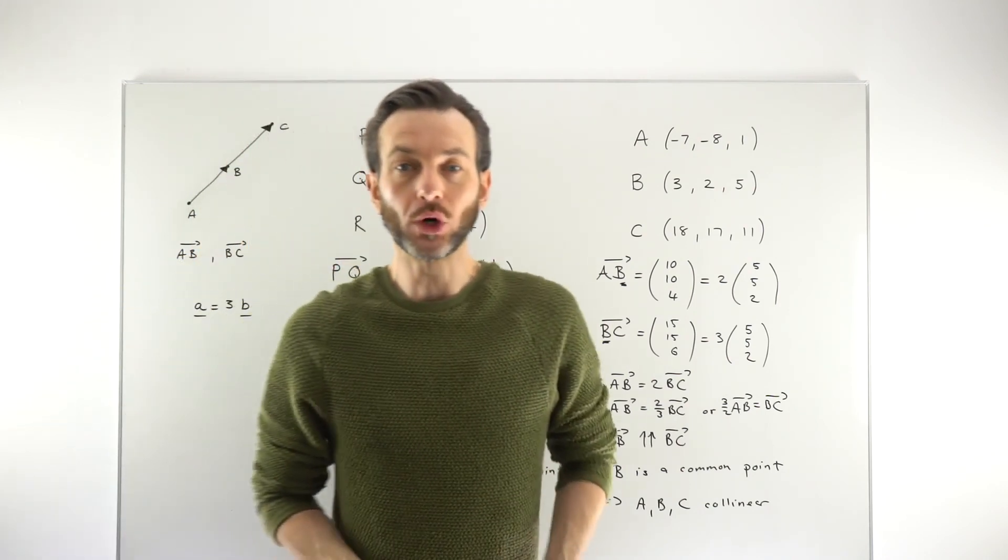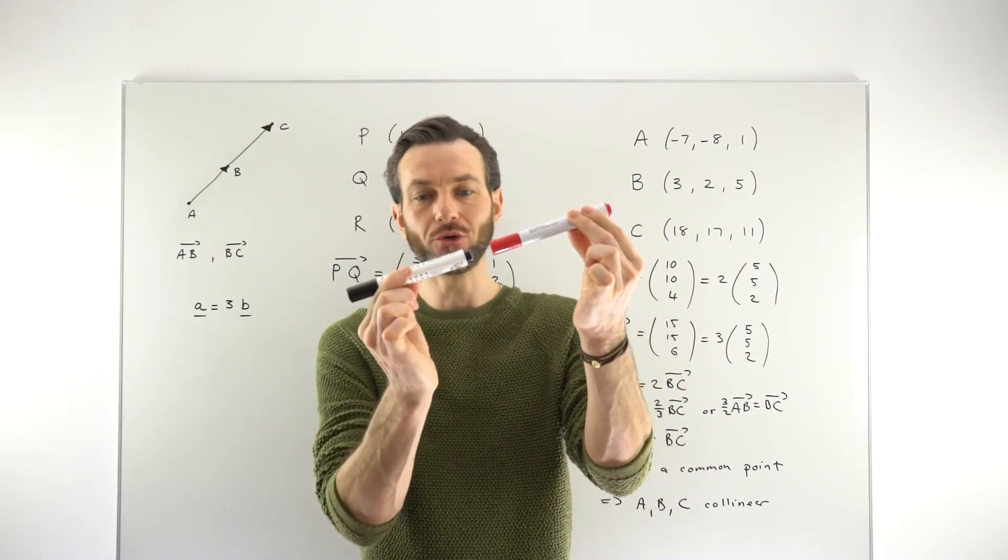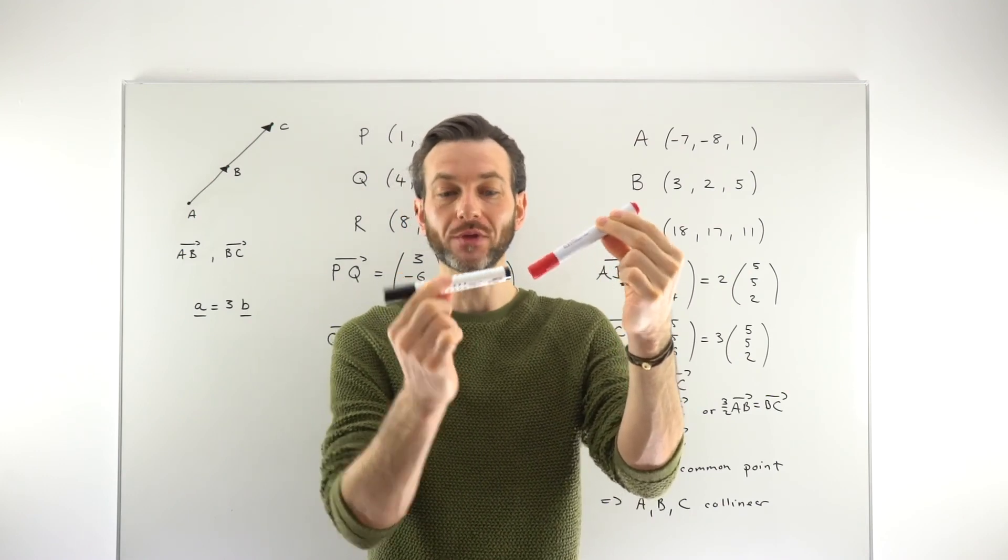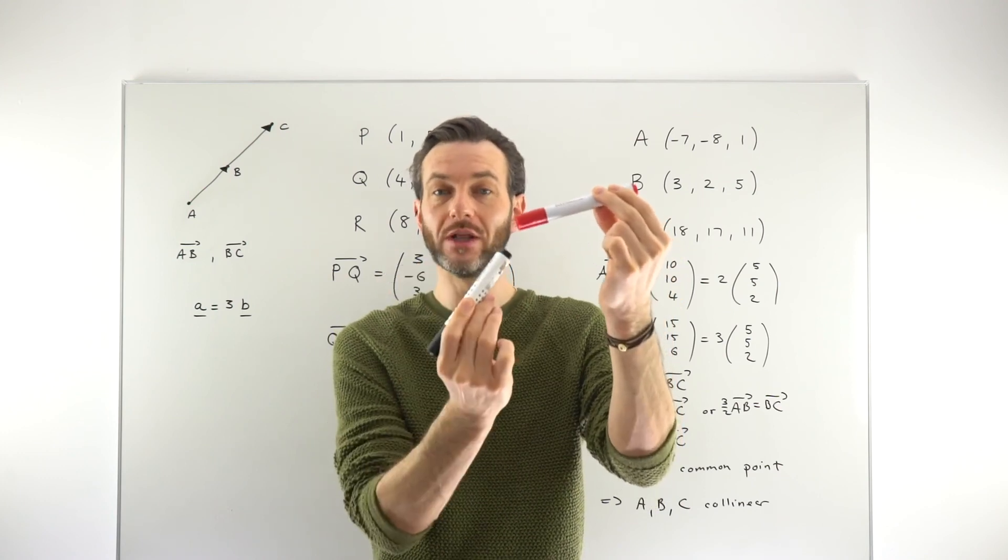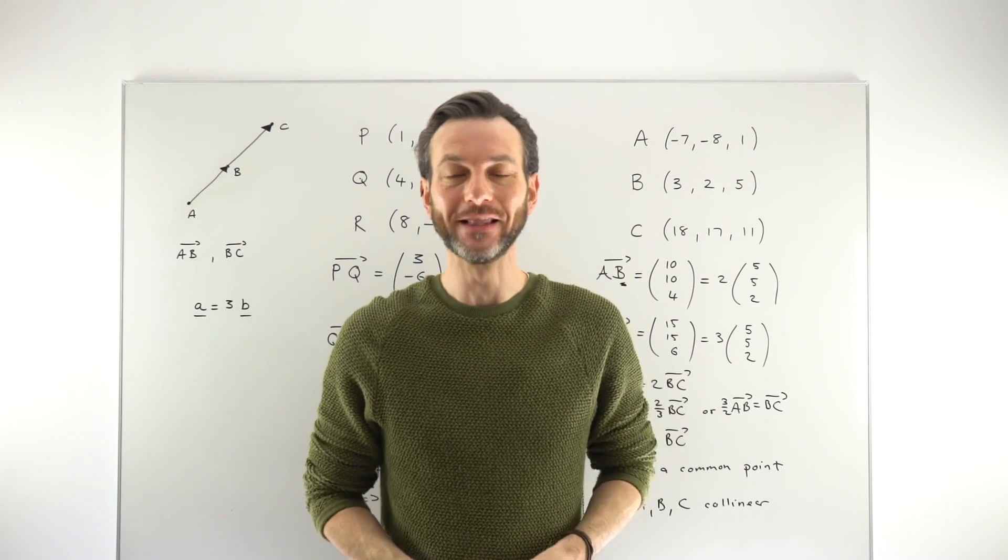Okay, so the same method does work, like I said earlier, using gradients. Because instead of showing your vectors are parallel, if you can show that these lines have got the same gradient, that's also just another way of saying that they go in the same direction rather than in different directions. So we've only looked at the vector method in this class.